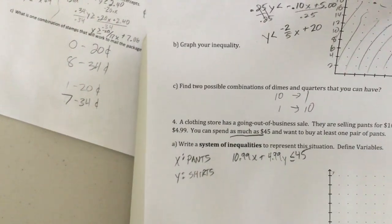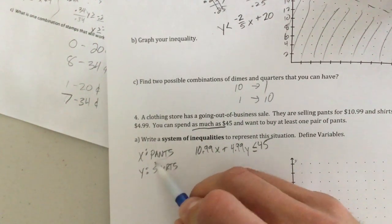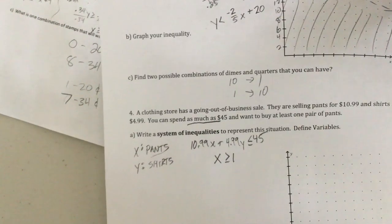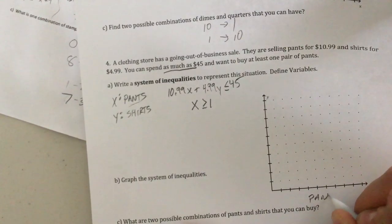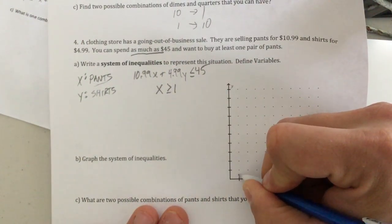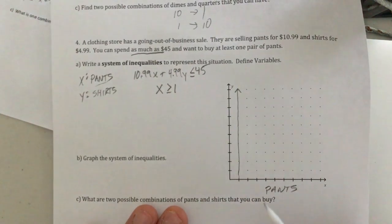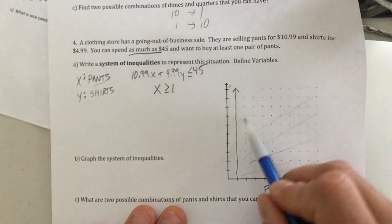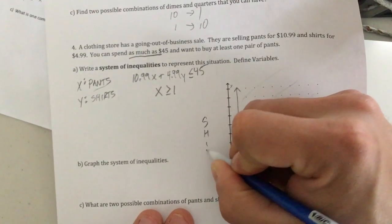So 10.99X plus 4.99Y spend as much as $45. So that's less than or equal to $45. And you want to buy at least one pair of pants. So X is pants. So that must be at least greater than or equal to one. Graph the system of inequalities. I'm going to label this pants here along the Y axis. X must be greater than or equal to one. That means I'm going to have a line here because this is VUX, vertical, undefined, X equals, and it will be shaded everywhere over here because I have to buy at least one pair of pants. That means this will be my shirts.